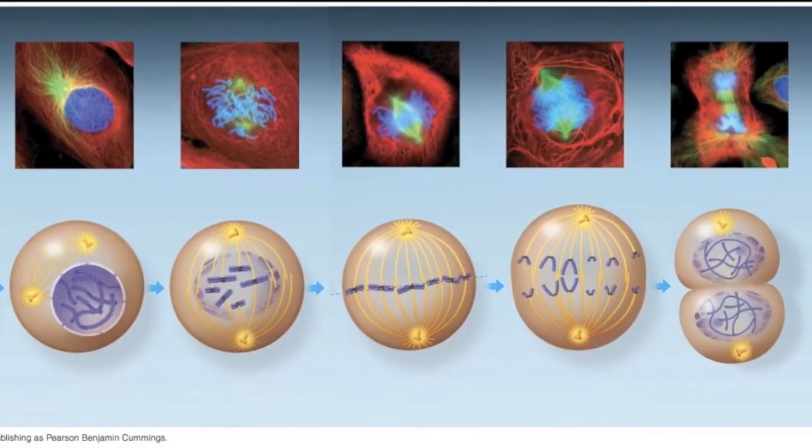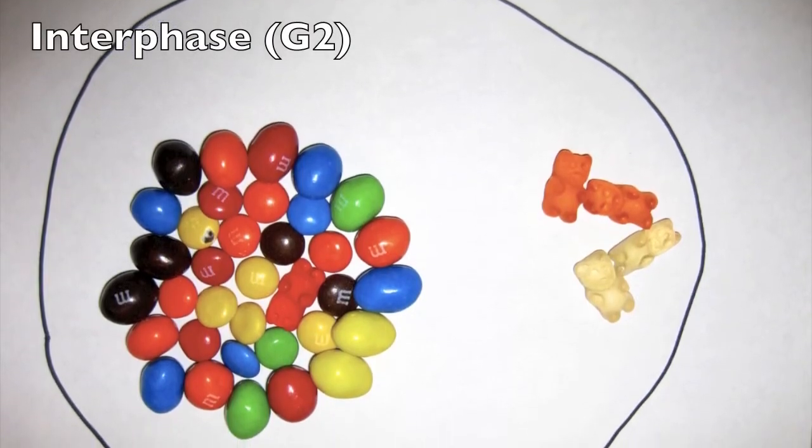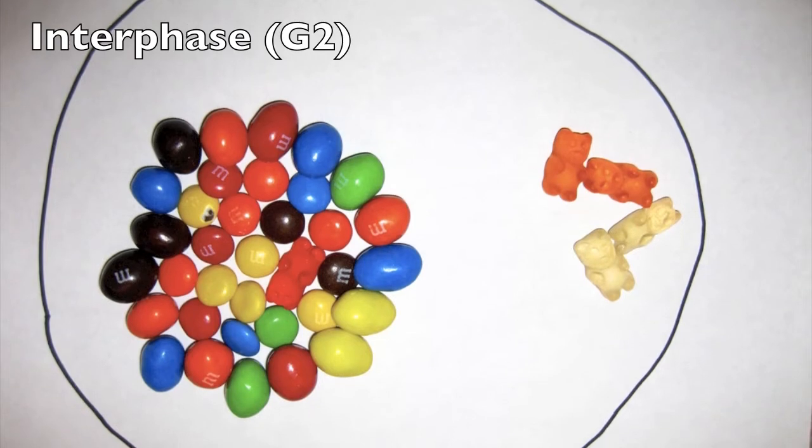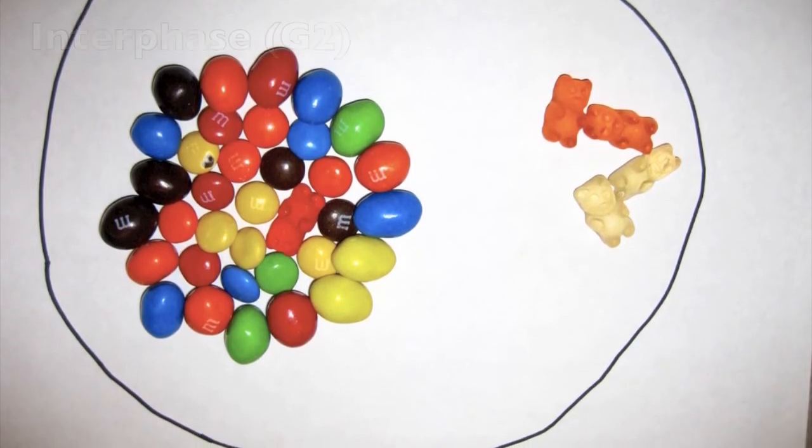Our video uses candy to represent the phases of mitosis. Here the gummy bears represent the centrosomes, M&Ms make up the chromatin fibers, and the larger peanut M&Ms show the nuclear envelope.